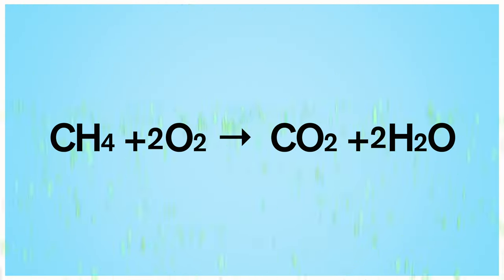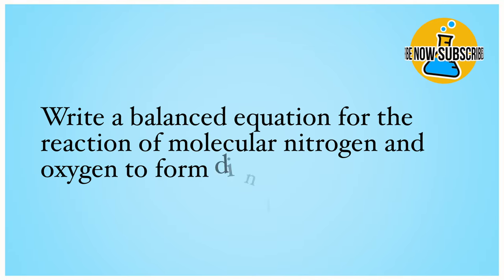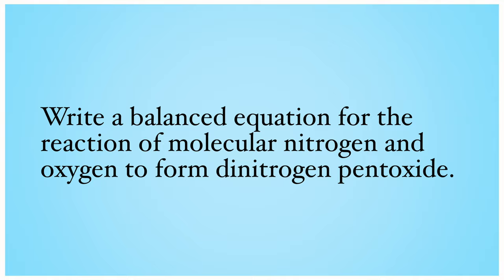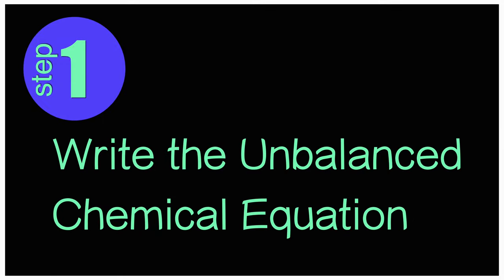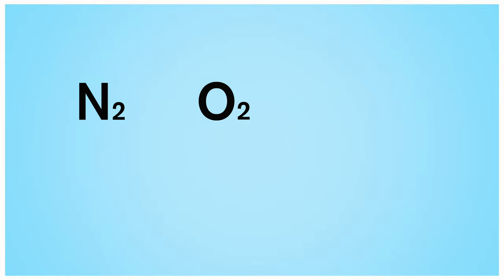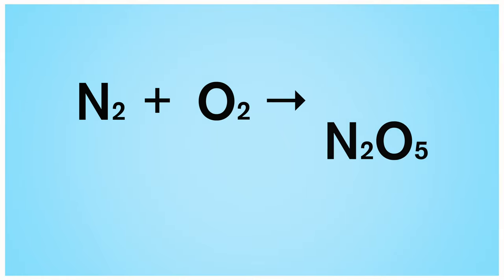Let's try one more example. Write a balanced equation for the reaction of molecular nitrogen and oxygen to form dinitrogen pentoxide. Step 1: Write the unbalanced chemical equation. In this reaction, the reactants are N2 and O2. The product is N2O5, dinitrogen pentoxide.